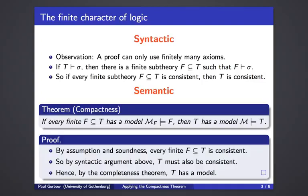The compactness theorem is really the semantic side of this. It reads as follows: if every finite sub-theory has a model, then the whole theory has a model. And if we have already proved the completeness theorem, then it is very easy to simply apply that to get the compactness theorem. This also reveals the very close connection between the semantic and the syntactic side.